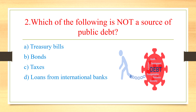Sources of public debt include: to control money supply — bonds are long-term, more than 5–10 years. Taxes are a source of revenue. Loans from international banks are also a source. The answer is taxes, because taxes are a source of revenue, not a source of public debt.